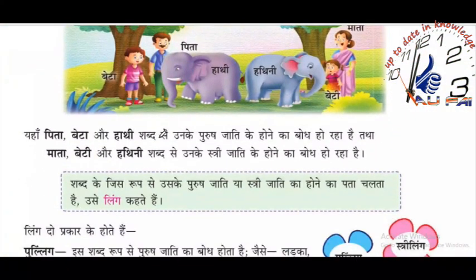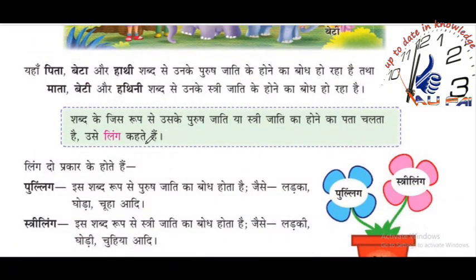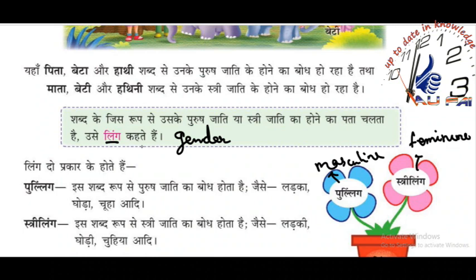The next part is a grammar section. In this grammar part we are going to learn about 'link gender.' This lesson also focuses on gender equality. 'Link' means gender. There are two genders: 'full link,' which means masculine, and 'stilling,' which means feminine. Words which denote male things — like 'ladika,' 'goda,' 'choha' — these are masculines. And words which denote female things — like 'ladiki,' 'godi,' 'chuhya' — these are feminines.